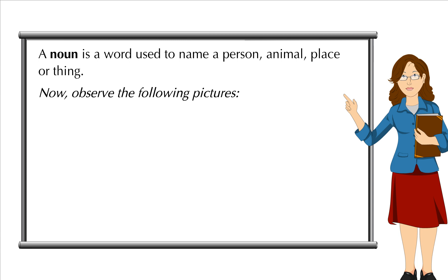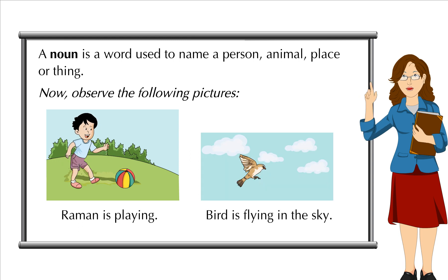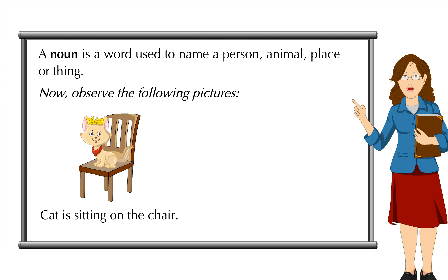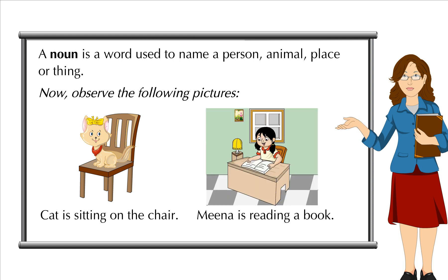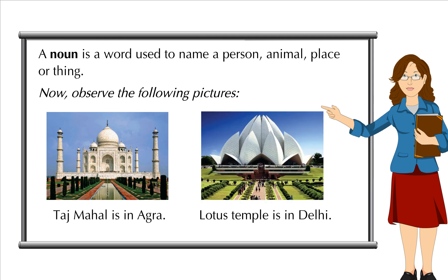Now observe the following pictures. Raman is playing. Bird is flying in the sky. Cat is sitting on the chair. Meena is reading a book. Taj Mahal is in Agra. Lotus temple is in Delhi.